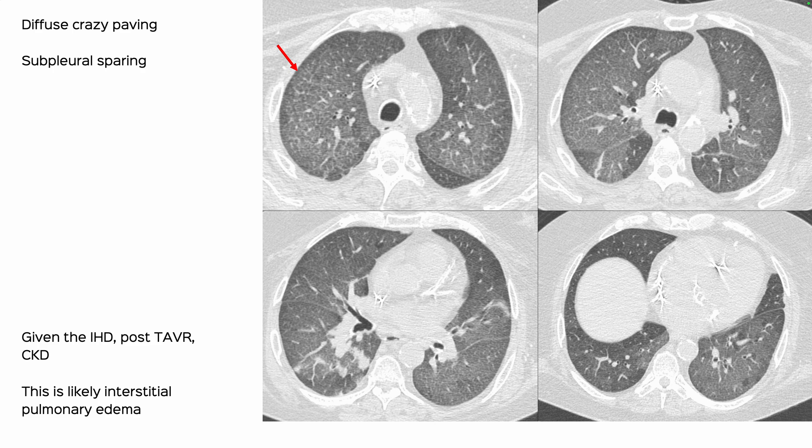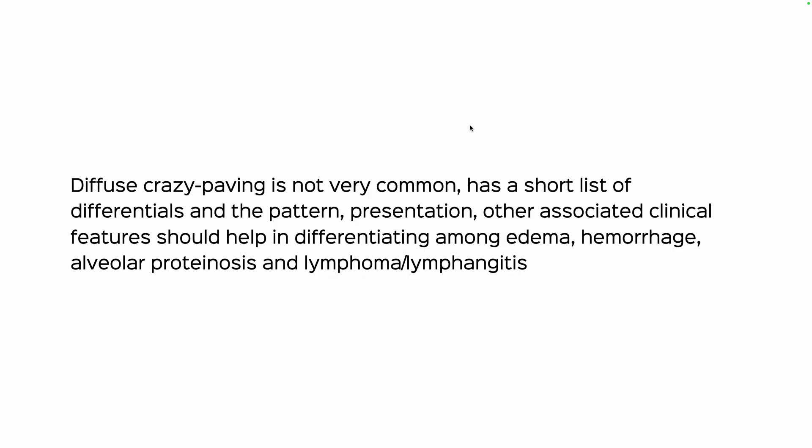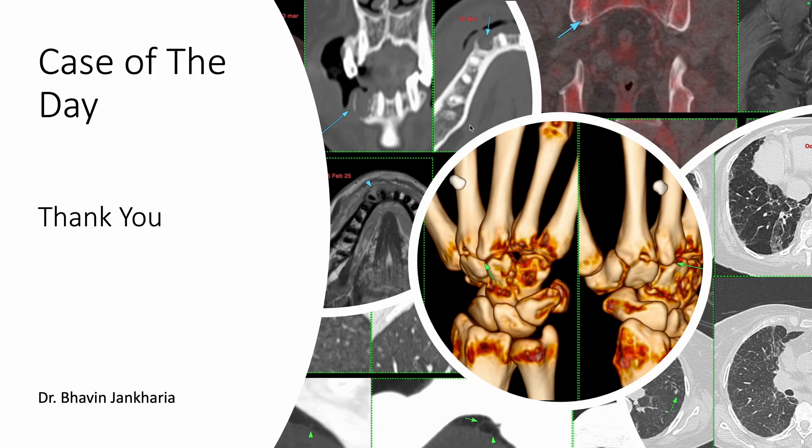We will be following up this patient — if anything untoward comes up, I will put up a post. This was a way to show my thought process when you see these patterns. Radiology is not in isolation; you need clinical context to reach a diagnosis. Diffuse crazy paving is not very common and has a short differential: edema, hemorrhage, alveolar proteinosis, lymphoma, and lymphangitis. Thank you for viewing this.